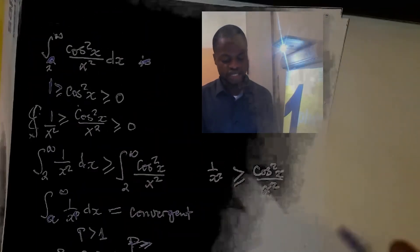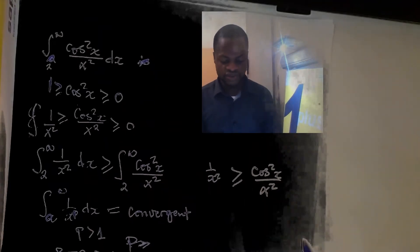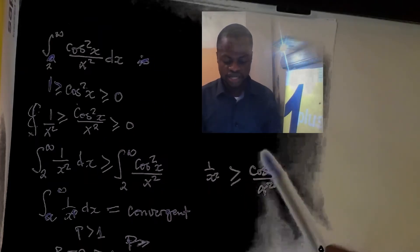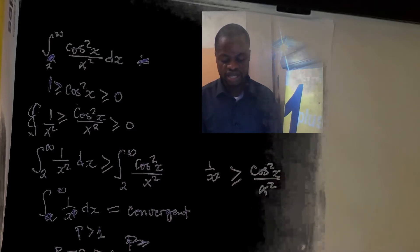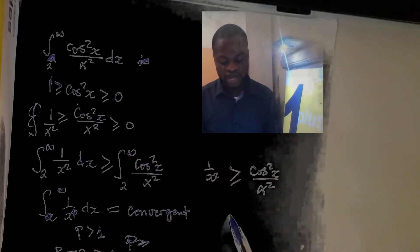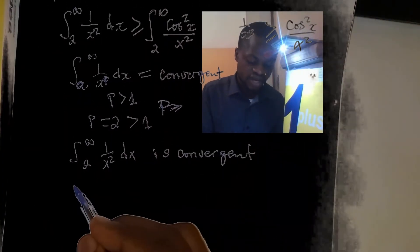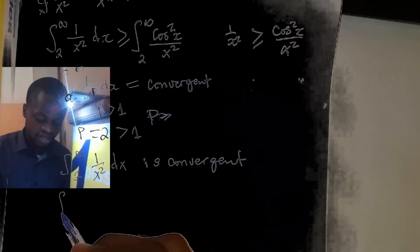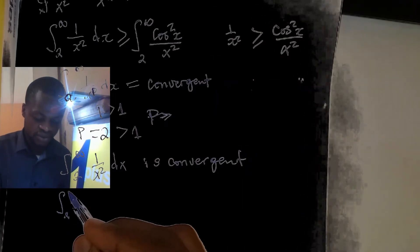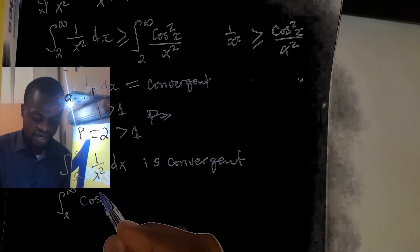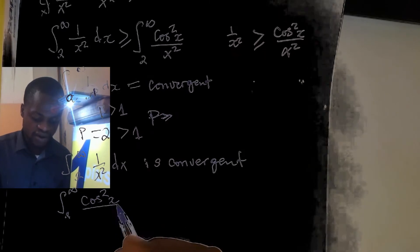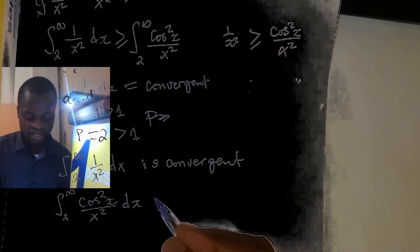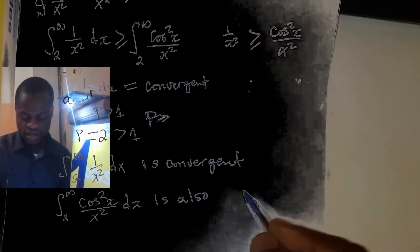By the comparison test, since the integral of 1/x² is convergent, the integral of the function below it is also convergent. We conclude that by comparison test, the integral from 2 to infinity of cos²(x)/x² dx is also convergent.